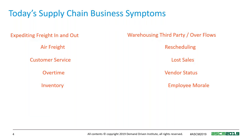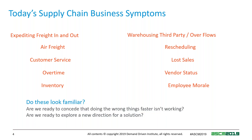What we end up with as symptoms: rescheduling — constant. We run a lot of overtime. We are expediting freight in or out. We have inventory problems. And one that often gets left aside — employee morale is not doing as well as we would like. Are we ready to concede that doing the wrong things faster is not the solution, and perhaps we need to look in a slightly new direction?